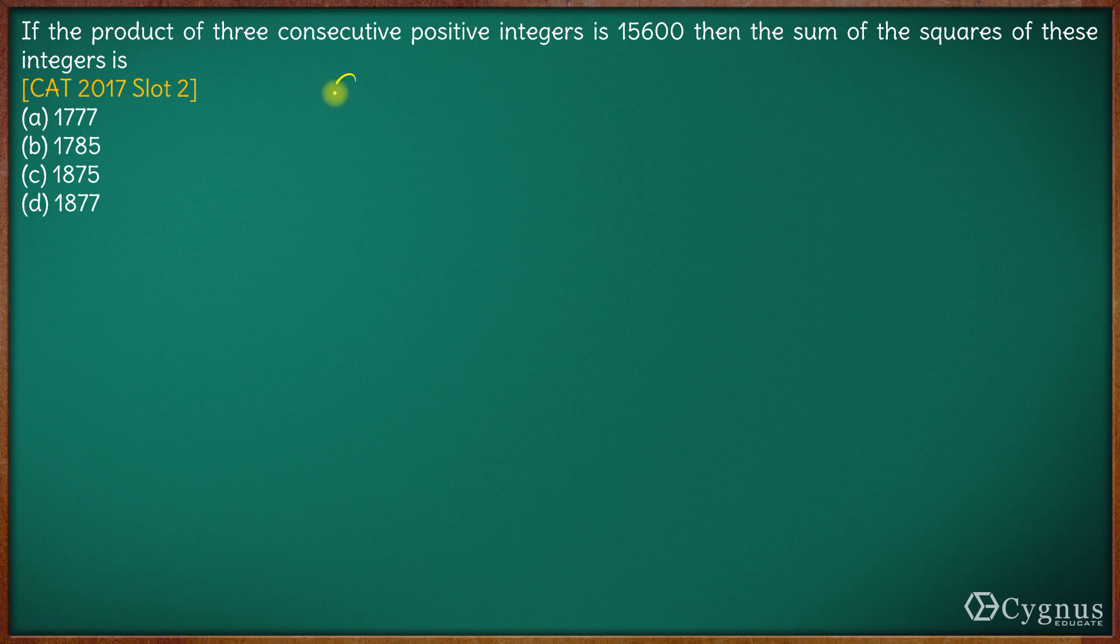Okay, so if one of the numbers is a, the next number will be a+1 and the next number will be a+2. We have the product of these numbers is equal to 15600.